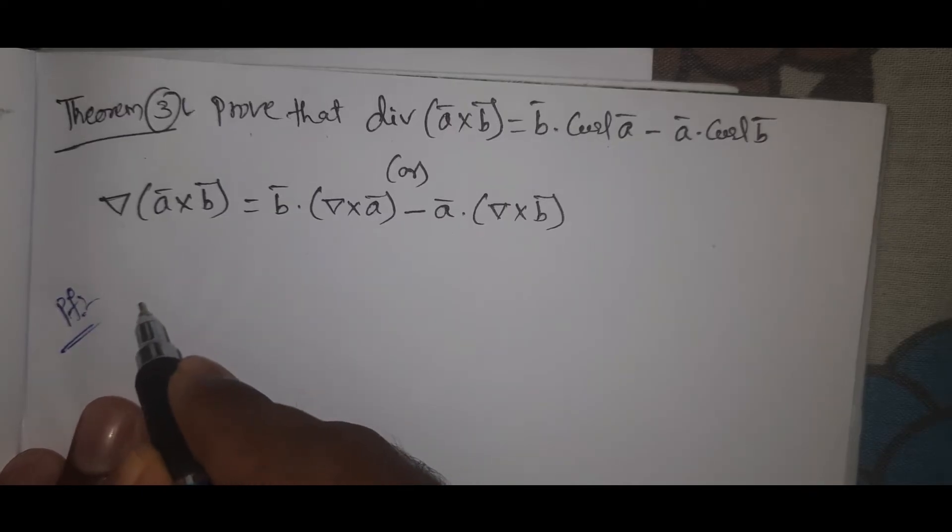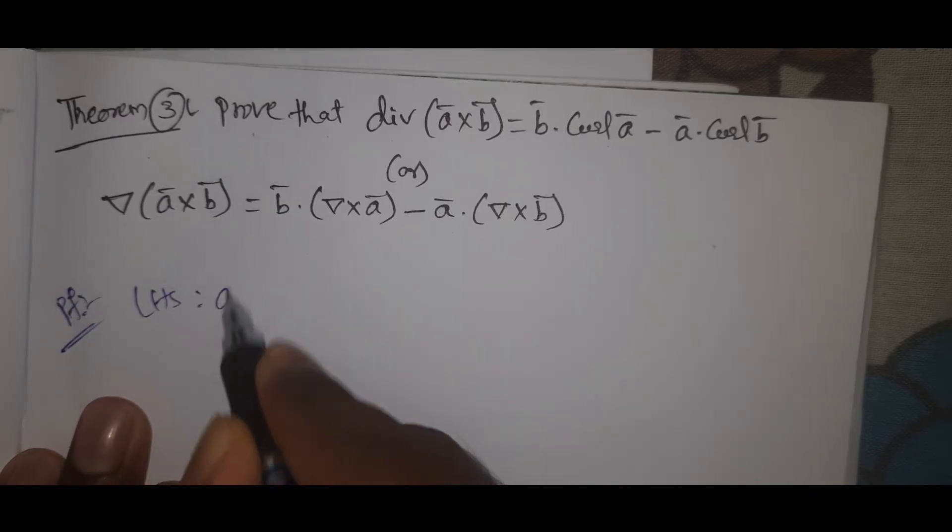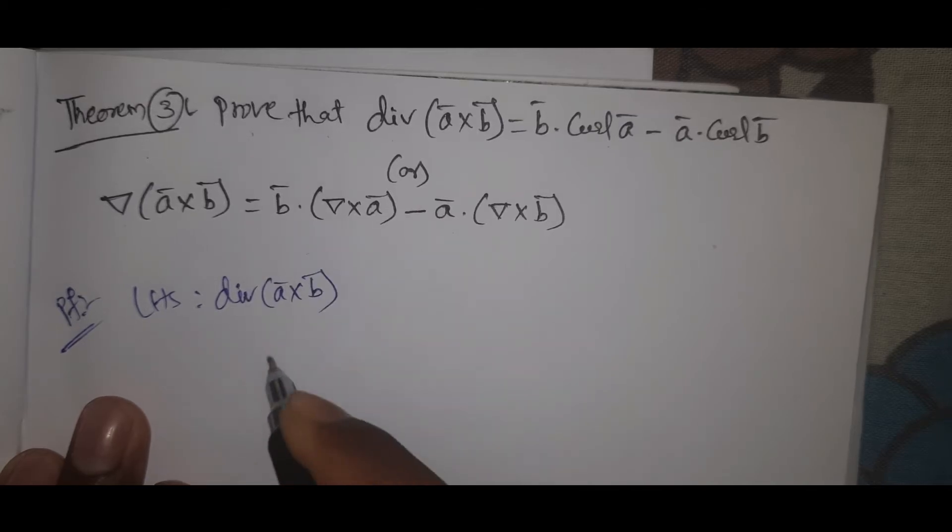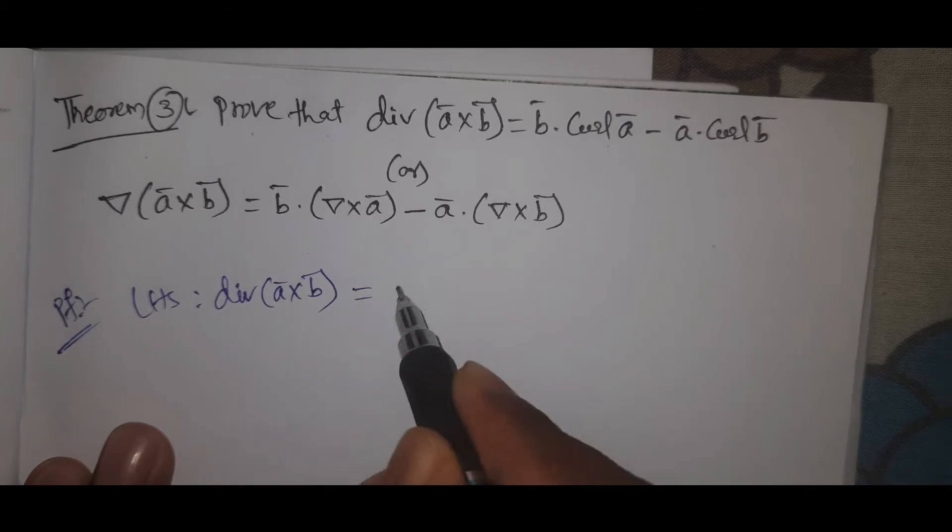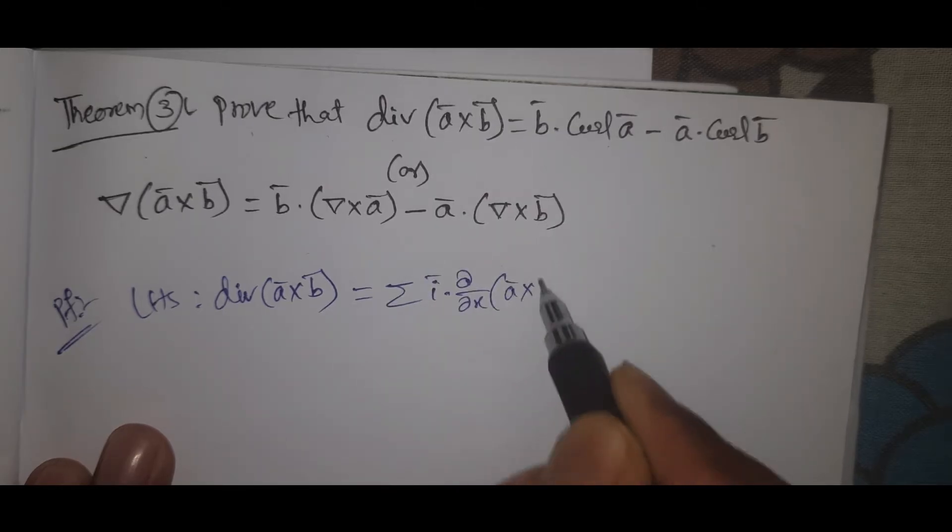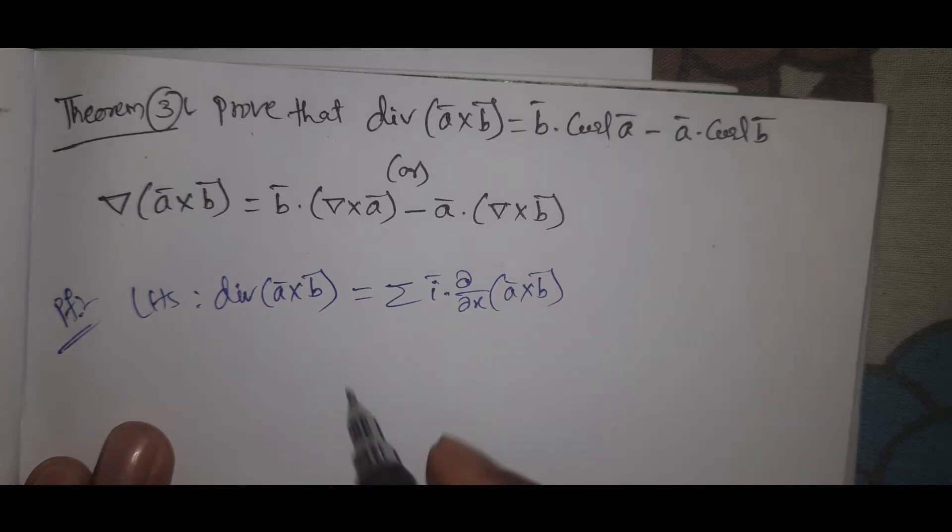Now see here, LHS. LHS what is it? Divergent a bar cross b bar. A bar cross b bar, that equal to summation i bar dot dou by dou x into a bar cross b bar.